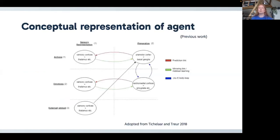In earlier work, we made a conceptual representation of how an agent would come to a decision. We linked those to neural correlates and we had on the left side the sensory representation states, which represents the way that stimuli are processed in the brain. We have this for actions, emotions, and external stimuli.